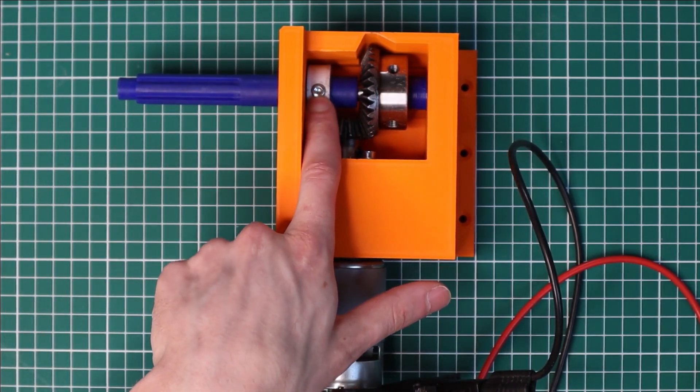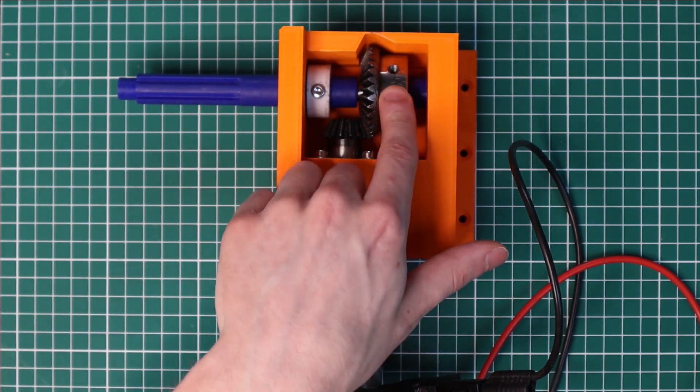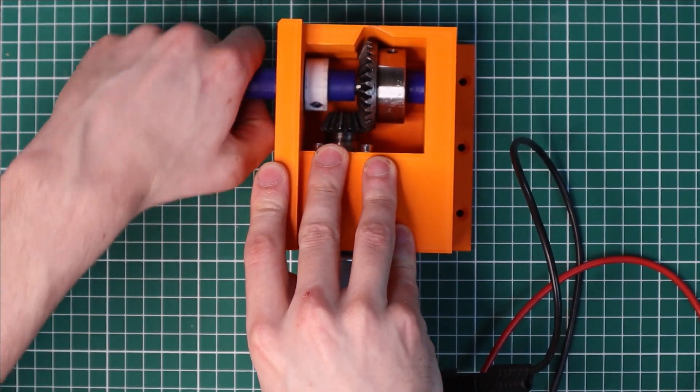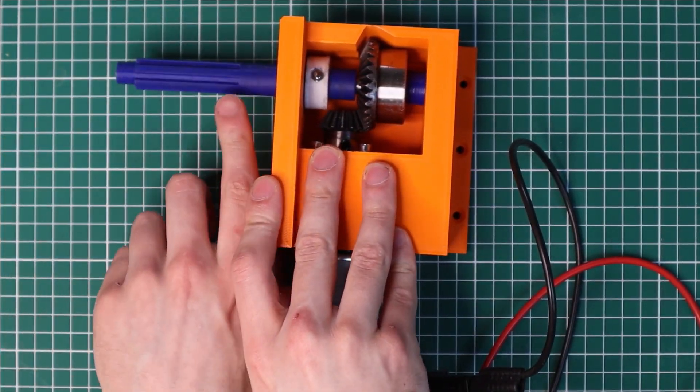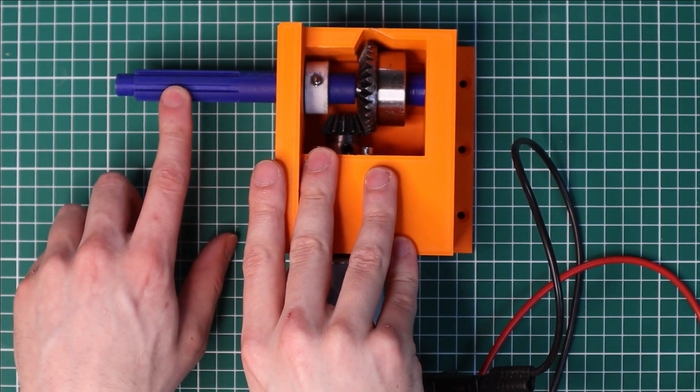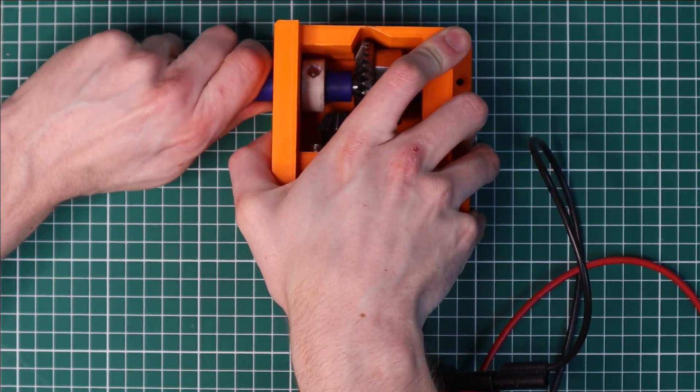Now this screw has two purposes at the same time. First, it ensures that when this gear is turned that the entire shaft turns in unison and that in particular the spline section of the shaft here is also turned. Secondly, it also prevents the shaft from being pulled out this way.